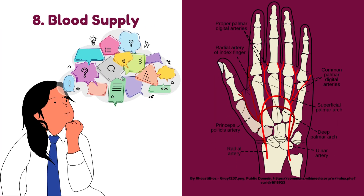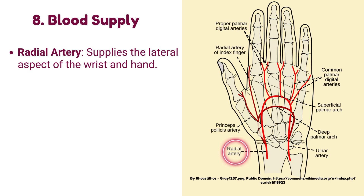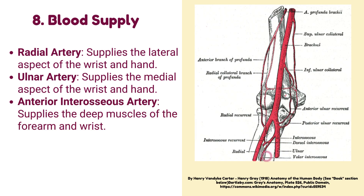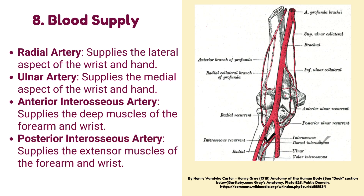Number 8: Blood supply of the wrist joint. Radial artery: it supplies the lateral aspect of the wrist and hand. Ulnar artery: it supplies the medial aspect of the wrist and hand. Anterior interosseous artery: it supplies the deep muscles of the forearm and wrist. Posterior interosseous artery: it supplies the extensor muscles of the forearm and wrist.